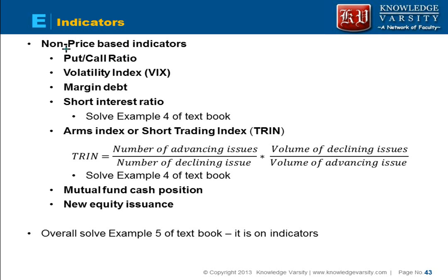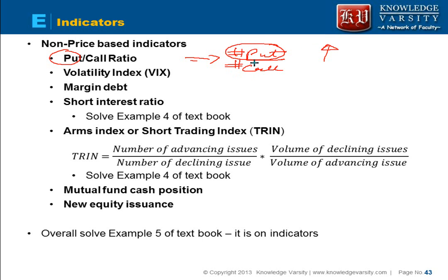One type of non-price based indicator is the put-call ratio. As the name implies, it finds the ratio between the number of puts and the number of calls in the market. If the put-call ratio is very high, it means that people are buying more puts compared to calls, indicating the market is bearish. If the put-call ratio is very low, it means fewer puts compared to calls, meaning people are bullish and buying more calls.